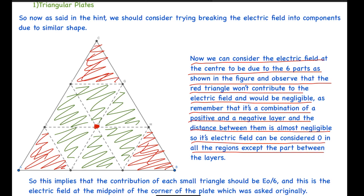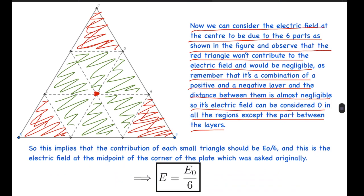be one-sixth, as there are six triangles and each are symmetric. So its contribution would be one-sixth, and it will be E₀/6 as the electric field is E₀. This is the electric field at the midpoint of the corner of the plate which was asked originally. If we see closely, this is the same plate equivalent to the same equilateral triangular plate and we have been